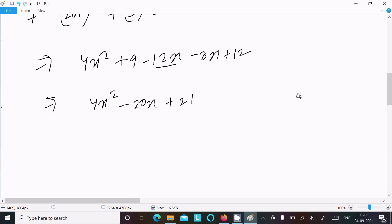Now this is in the form of a quadratic equation. Try factoring using the last term method. 4x² × 21 = 84x². Minus 20x we can write here as -14x - 6x.